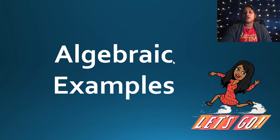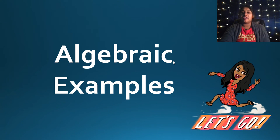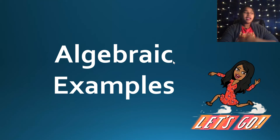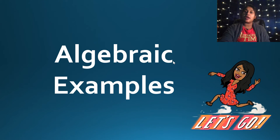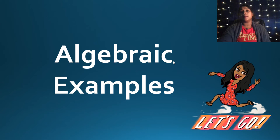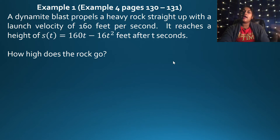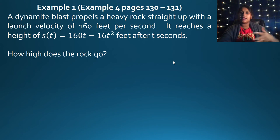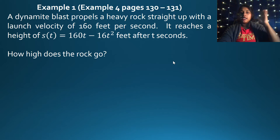Let's start with some algebraic and graphical examples, approaching PVA the same way we analyzed F, F prime, and F double prime. We have an example of a dynamite blast launching a rock.